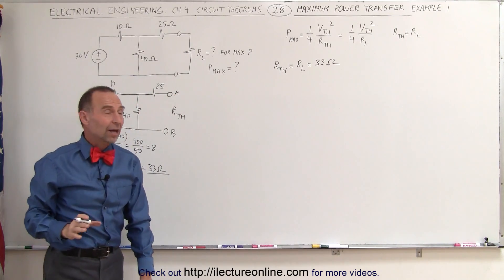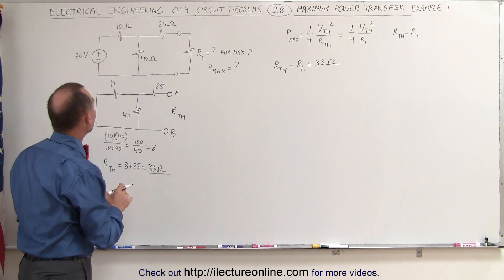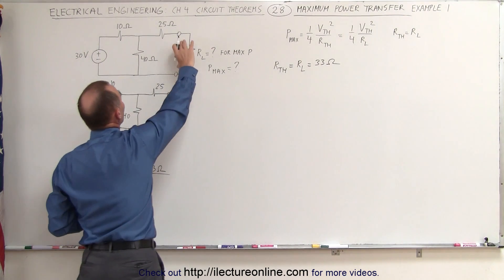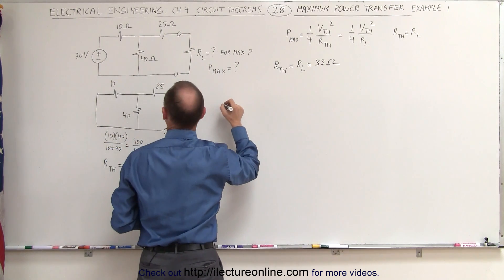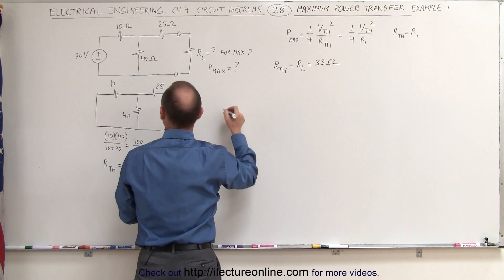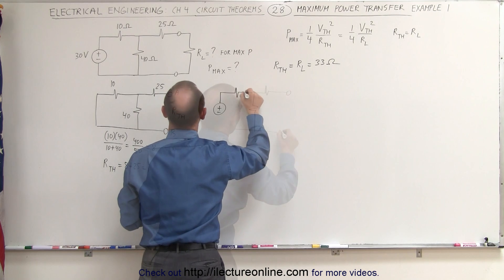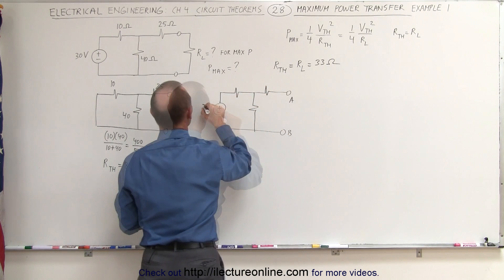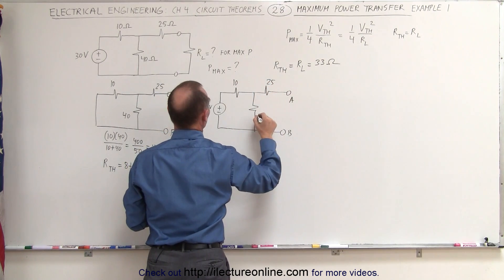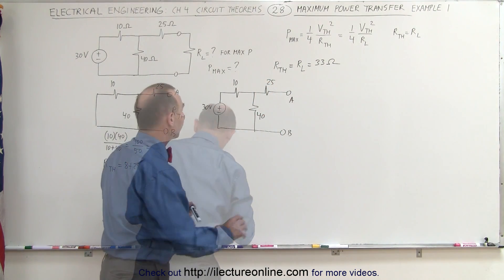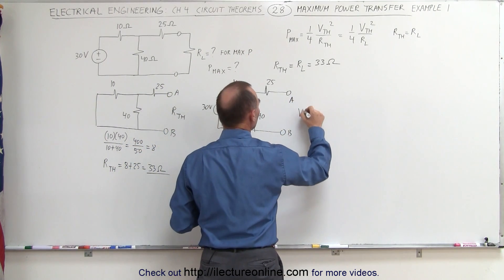The next thing we need to do is find what the maximum power transferred is. In order to do that, we need to find the Thevenin equivalent voltage. What we need to do is open the circuit and find the voltage between A and B with the circuit in place. We have a 30-volt source, a 10-ohm resistor, a 25-ohm resistor, and a 40-ohm resistor. The voltage across A and B will be the Thevenin voltage, V-Thevenin.